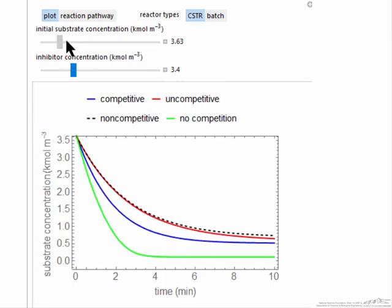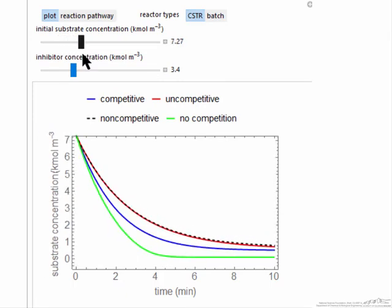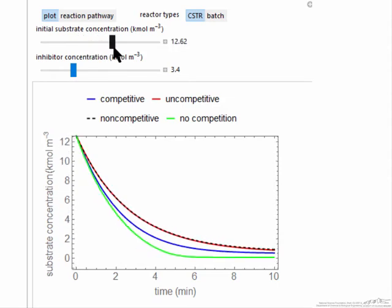As we change the initial substrate concentration, notice this y-axis scale is changing. But as we have more substrate, then the inhibitor is going to have less of an effect. Substrate at higher concentration competes better for the enzyme, and so we see a smaller difference between the two.